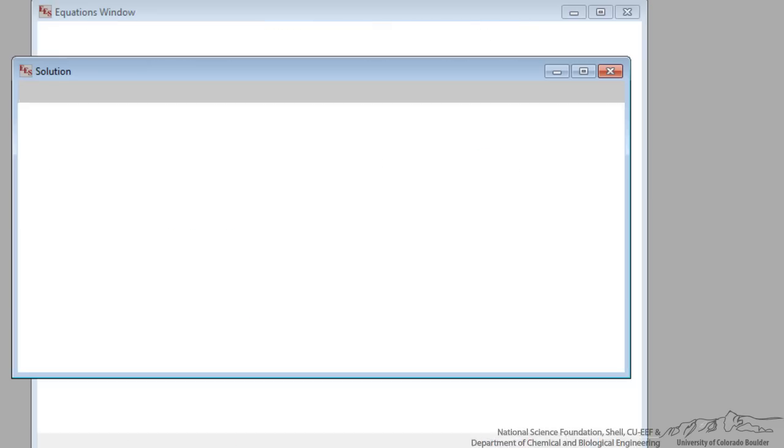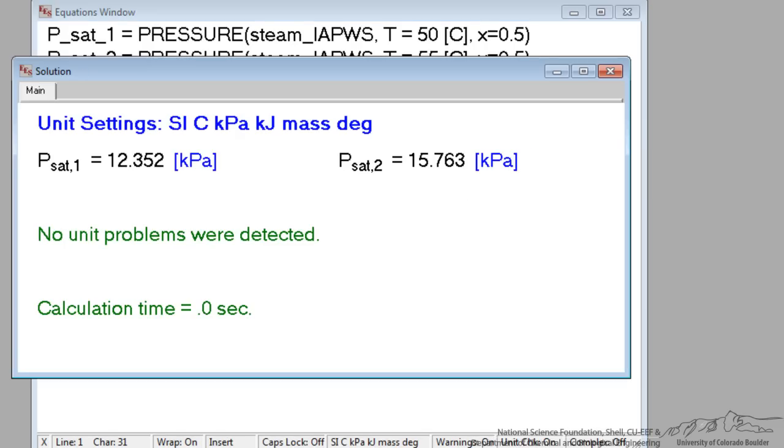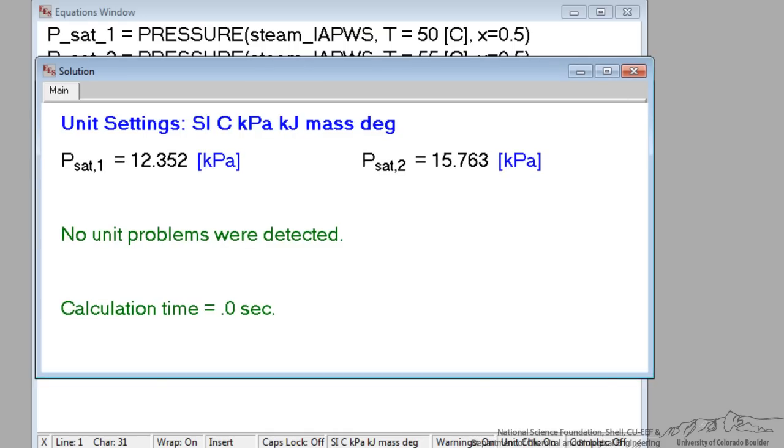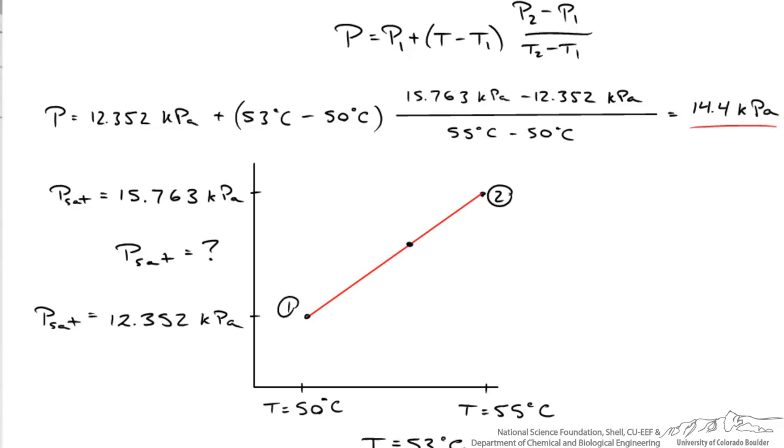So I will run it and what I come up with is P1 sat of 12.352 kilopascal and P2 sat of 15.763. And those are the exact same numbers for P sat for point 1 and P sat for point 2.